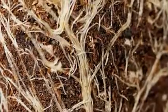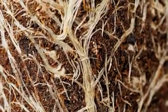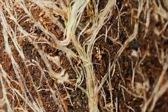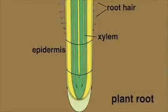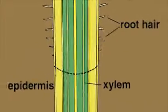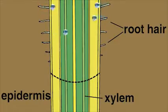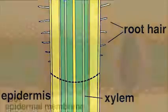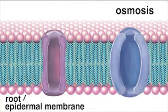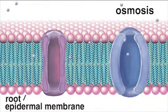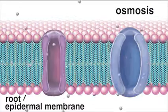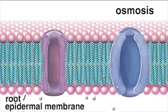Substances can move into the root in several ways, with the principal method being osmosis. During osmosis, free water molecules pass from the soil into the epidermal cells using the root hair membrane. Looking at this process at the molecular level, we see that the small water molecules pass easily through the selectively permeable membrane of the epidermal cells.